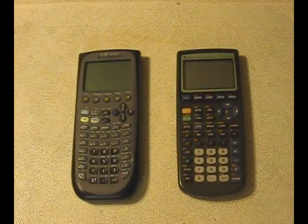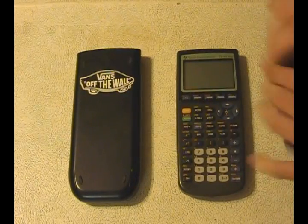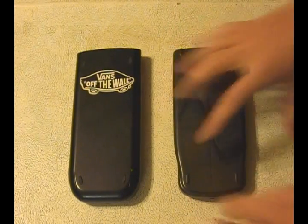The biggest difference between the TI-89 and the TI-83 is that on the TI-89, the cover slips from the bottom, and on the TI-83, the cover slips from the top.